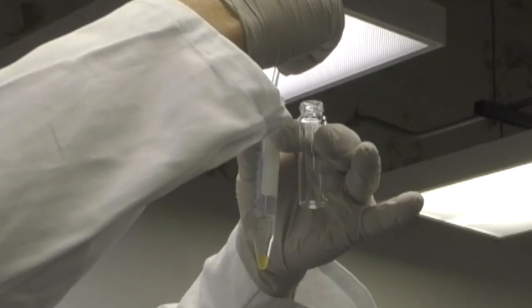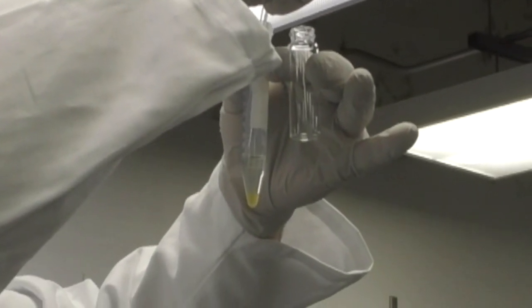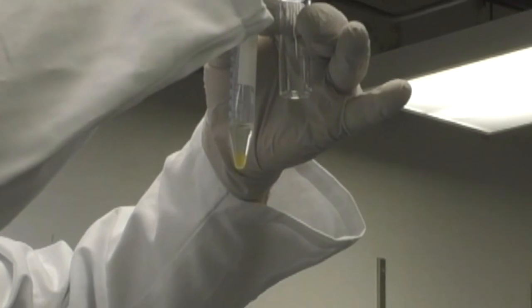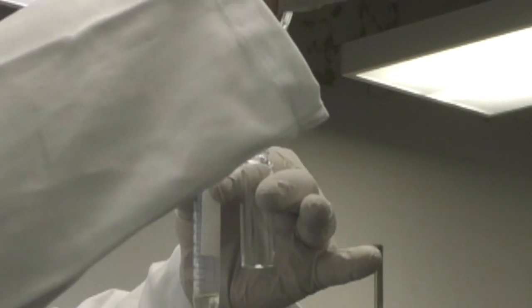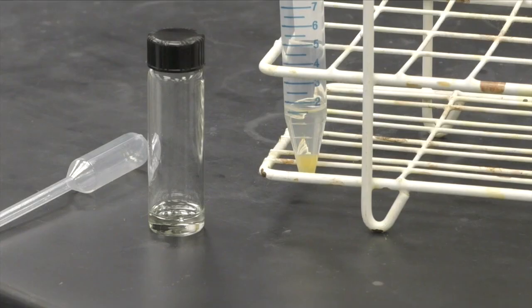Using a plastic transfer pipette, remove about a half a milliliter up to maybe 1 milliliter of the top layer into a 4-dram vial. This is the fatty acid methyl ester you will use for analysis.